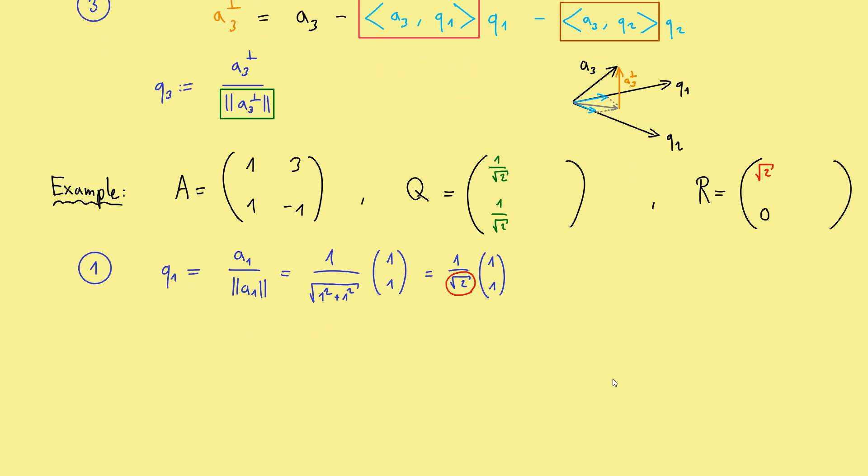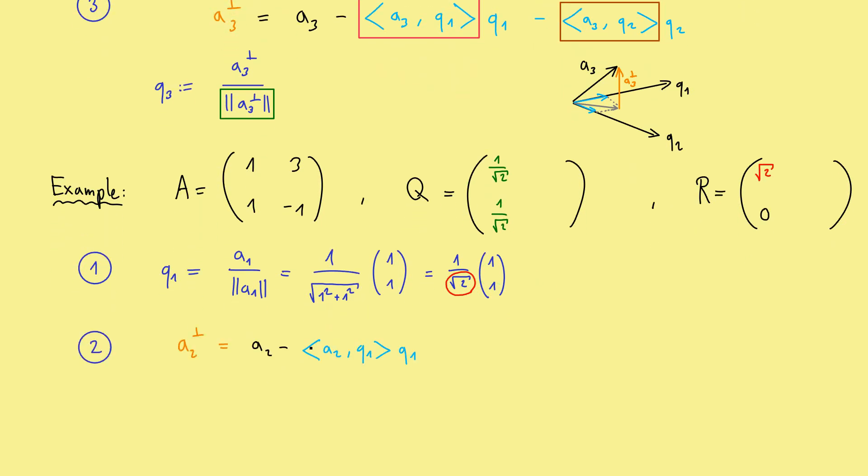Well, then let's do the second step. Let us use here the formula we know. So, we calculate here the orthogonal projection. But here we use the second column, which is 3 minus 1. And in the inner product we put in Q1, which is 1 divided by the square root of 2, 1, 1. And then we multiply again with Q1, which is again 1 divided by the square root of 2, 1, 1.